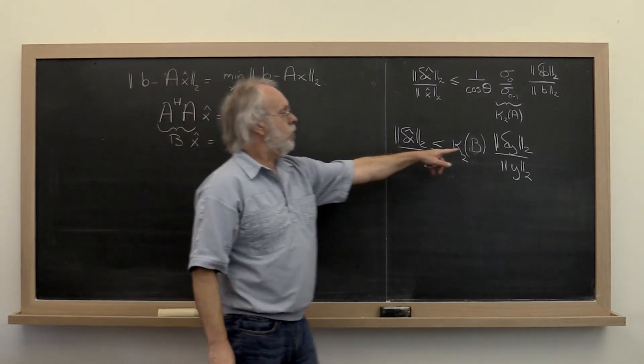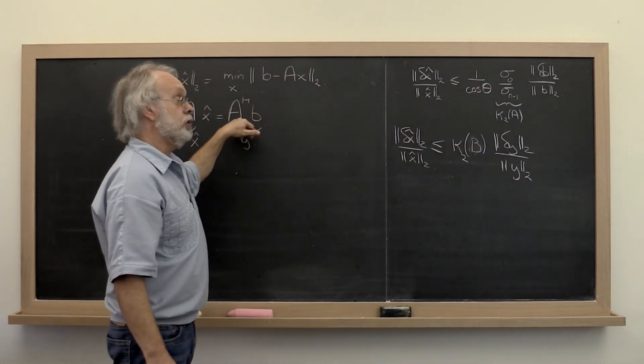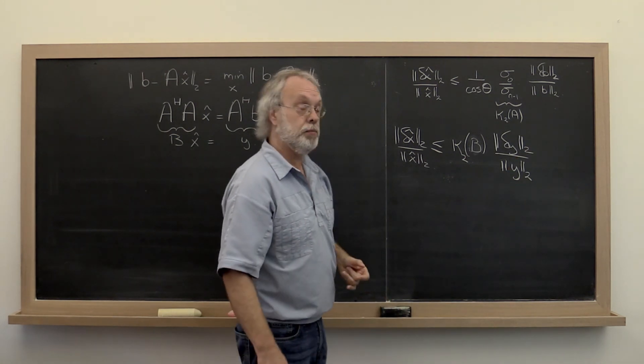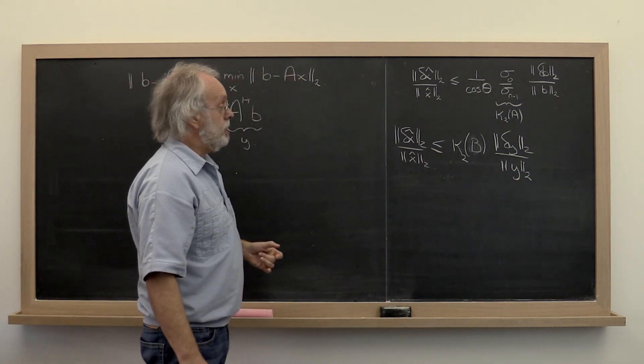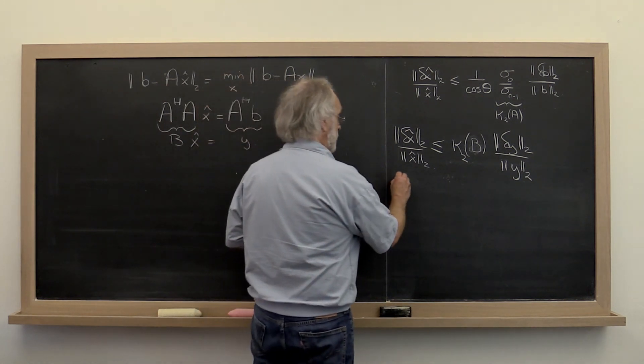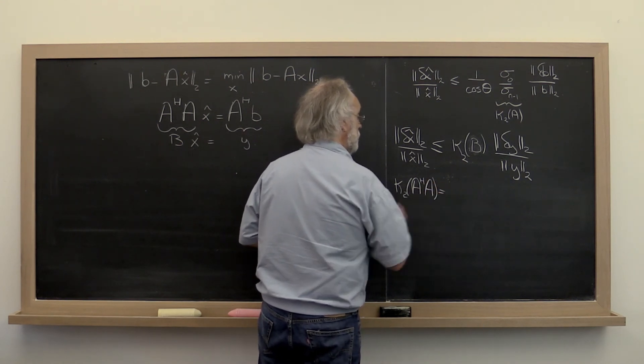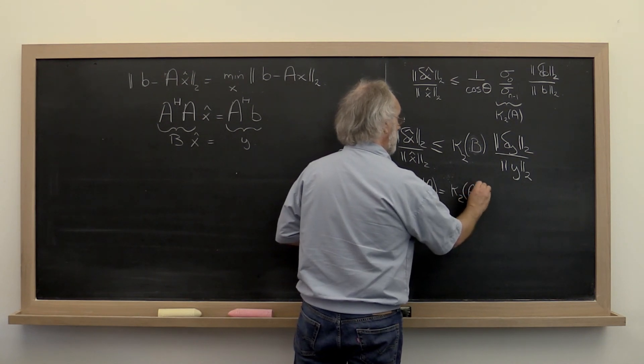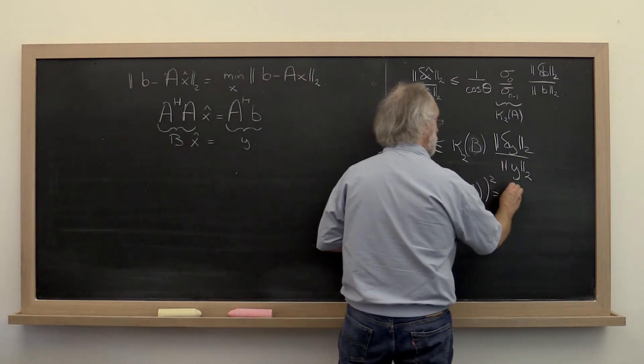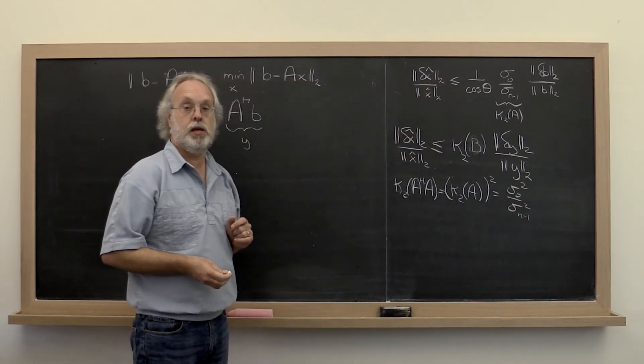And again, the error in Y may be partially due to a propagation of the error in B after you multiply by A Hermitian transpose. And in part, it may be due to errors in the computation. And now we've got a problem because you're going to do a homework that shows that the condition number of A Hermitian transpose A is equal to the square of the condition number of A. In other words, it's equal to sigma 0 squared divided by sigma n minus 1 squared.